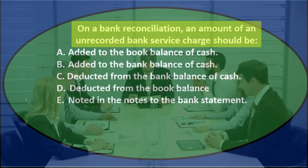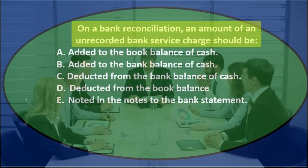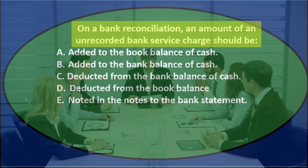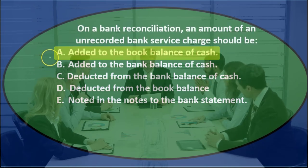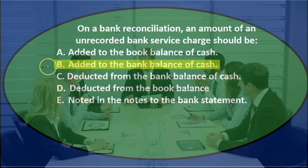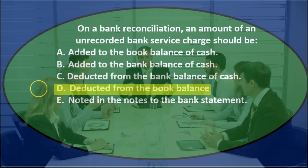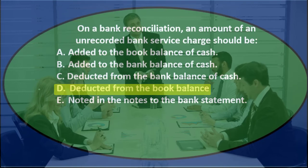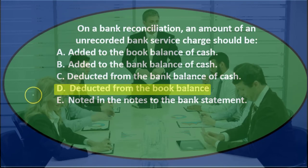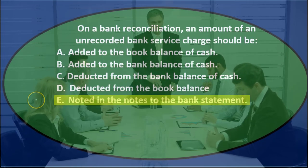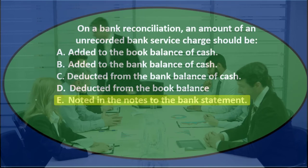Next question. On a bank reconciliation, the amount of an unrecorded bank service charge should be... A. Added to the book balance of cash. B. Added to the bank balance of cash. C. Deducted from the bank balance of cash. D. Deducted from the book balance. Or E. Noted in the notes to the bank statement.